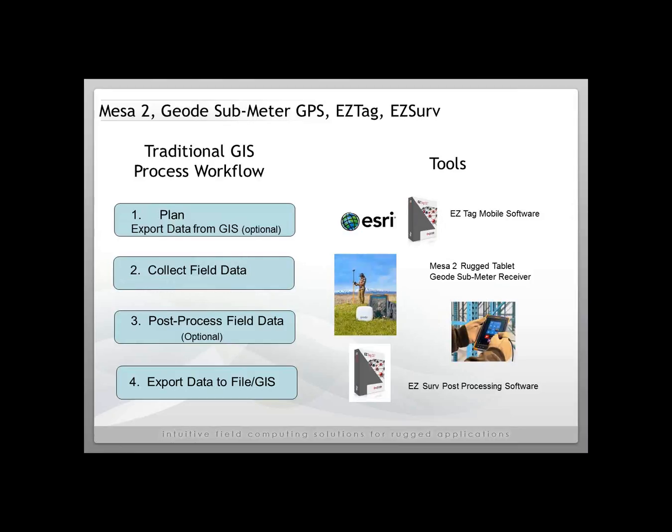Hello, this is intended to be a brief overview of the Mesa 2 Rugged Tablet from Juniper Systems, the Geode Real-Time Submeter GPS Receiver, the EasyTag Mobile Software, Professional Mobile GIS Software, and EasyServe Post-Processing Software. We're going to skim over a lot of details and talk about it at a high level, so if you need more details, feel free to visit our website or contact us and we're happy to talk with you about your specific questions or project.